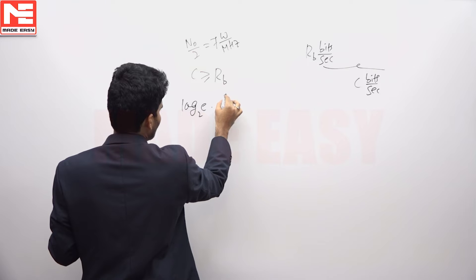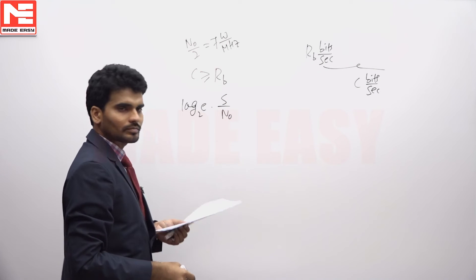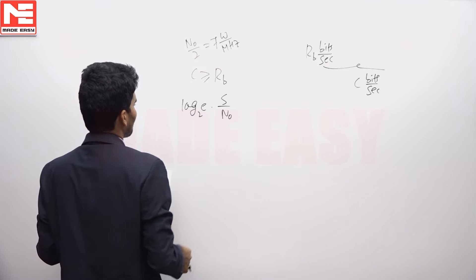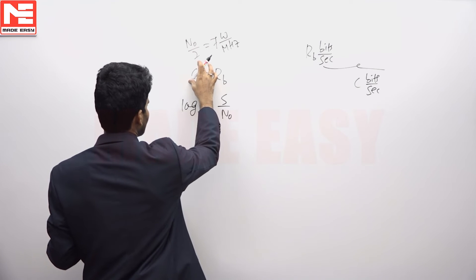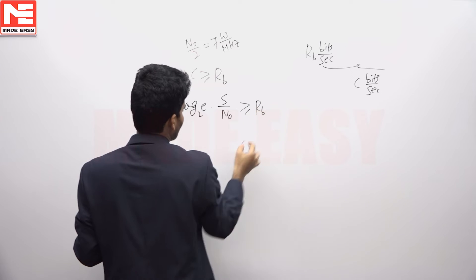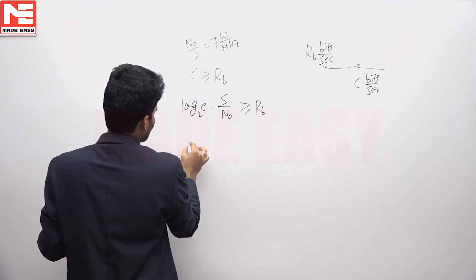This is S by N0. With infinite bandwidth, the channel capacity for AWGN channel is given by log E base 2 of S by N0 should be greater than or equal to RB.